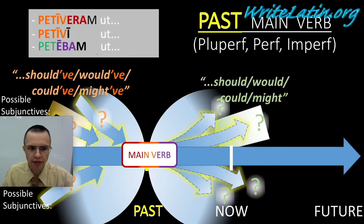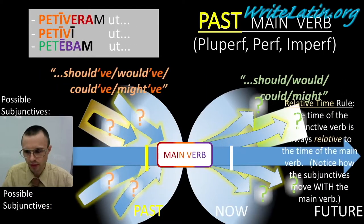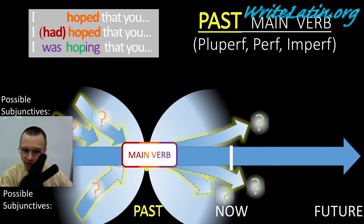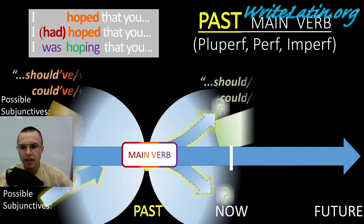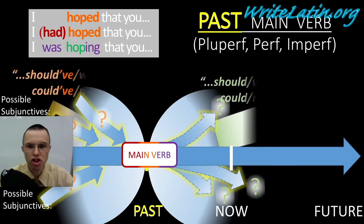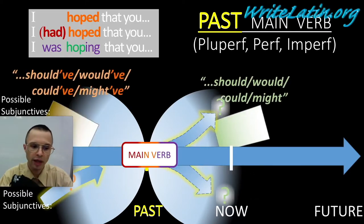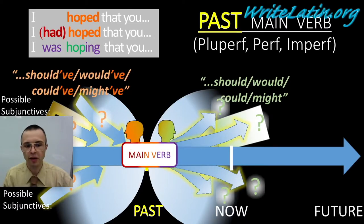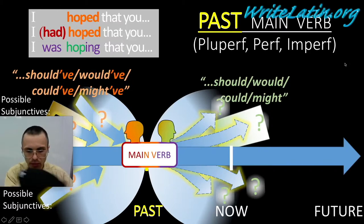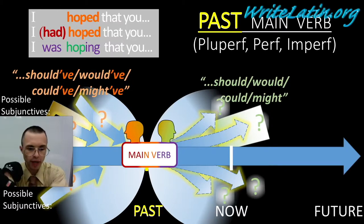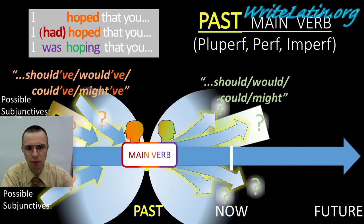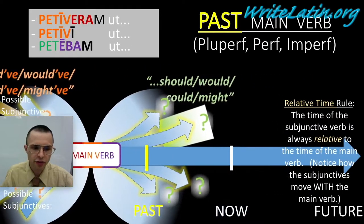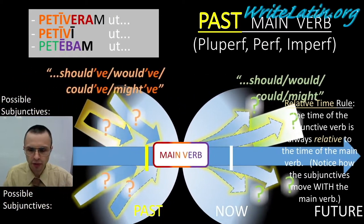And there are your Latin forms. If the main verb is any of these three, then the subjunctive will be should, would, could, or might — or should've, would've, could've, might've — based on whether we want to talk about looking forward to a future possibility or backward to a past possibility. This also follows the relative time rule: the time when the subjunctive occurred is relative to the time when the main verb occurred.